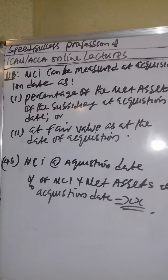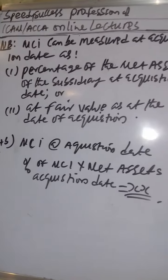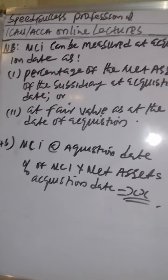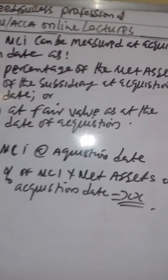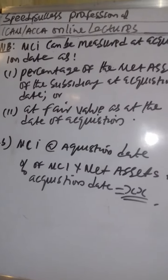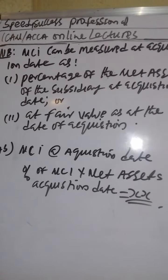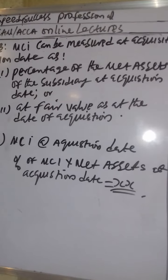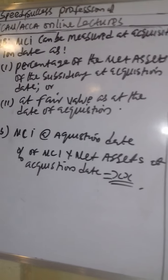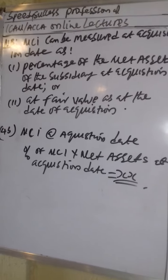Having determined NCI value at reporting date, how do we actually measure NCI? IFRS 3 gives us two methods. First, NCI can be measured as a percentage of net assets of the subsidiary at the acquisition date - that's the first method. Second, NCI can be measured at fair value as at acquisition date. So what it means is that if NCI for a company is 10 million naira at acquisition date...